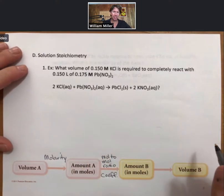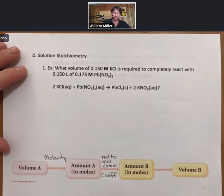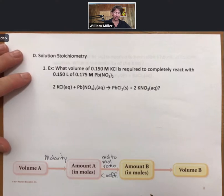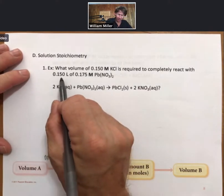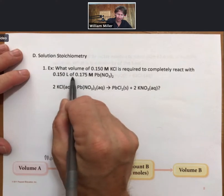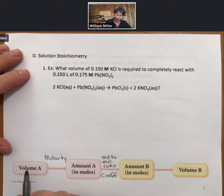And here's a very typical example. What volume of 0.150 molar potassium chloride is required to completely react with 0.150 liters of 0.175 molar lead-two-nitrate? You'll note that we have a volume and molarity, so these two numbers are going to be multiplied by each other. They are going to be our A substance.